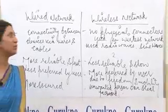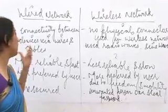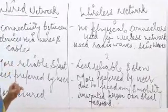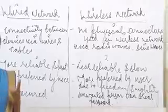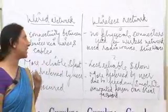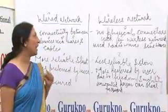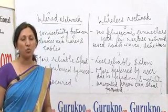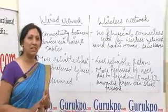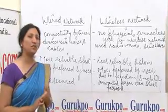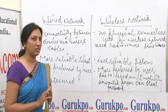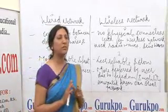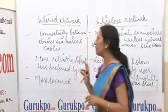First, I want to explain what we mean by a wired network. A wired network means if you want to connect two devices, you have to use wires and cables. In a wireless network, there is no physical connectivity between the two devices — we can connect them through sine waves, radio waves, or infrared radiations.